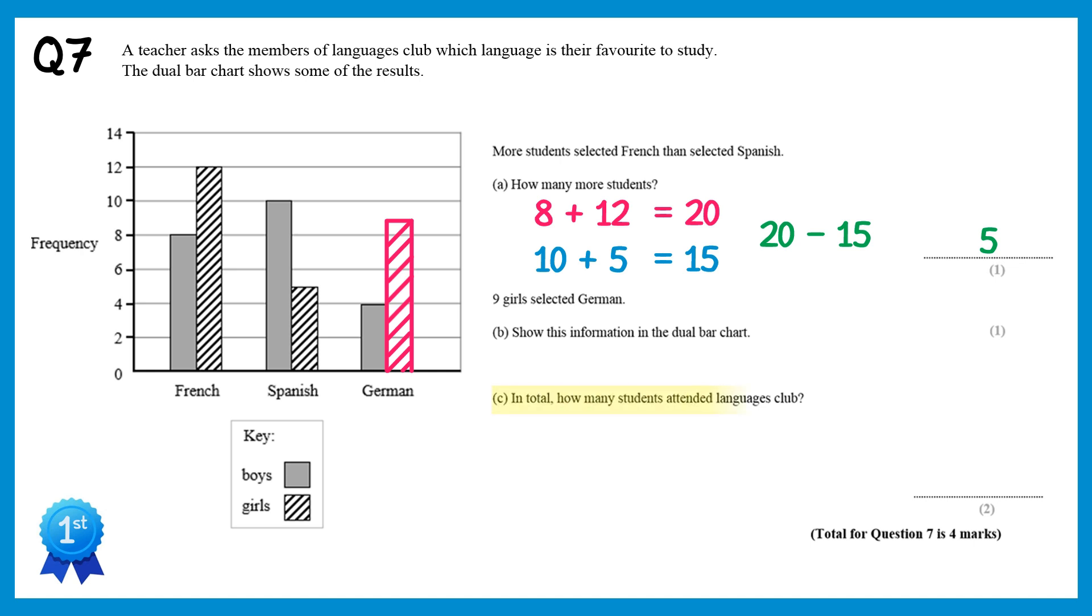We now need to work out the total number of students that attended Languages Club. We already worked out how many of those students picked French, that was 20. We also did those for Spanish, that was 15. So now we need to add in those that picked German. For this bar here there are 4, and this bar here there are 9. So we add 4 and add 9, and if you add all of these, you'll get 48 total students.